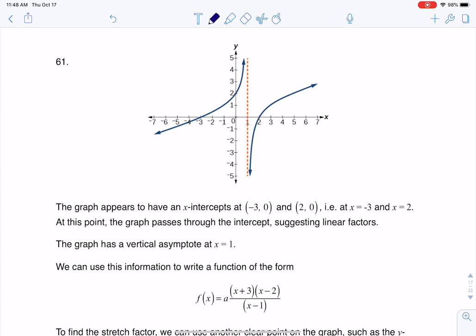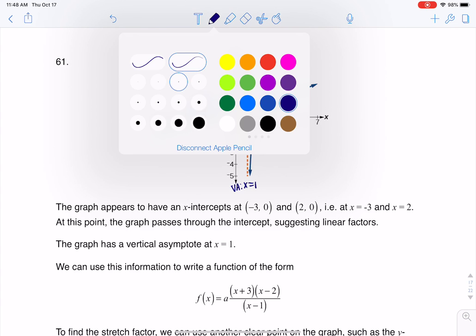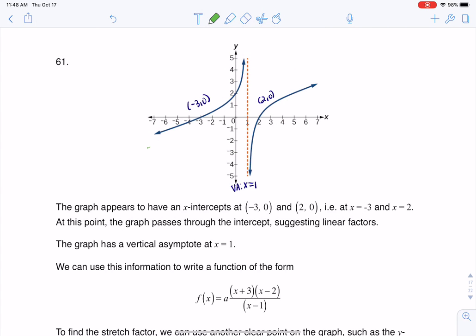So just taking a look at some of these traits here, I see I have a vertical asymptote at x equals 1. I see I have an x-intercept at (2,0) and another x-intercept at (-3,0) and from what I can tell, it looks like I have some kind of slant asymptote.